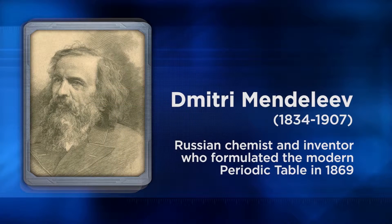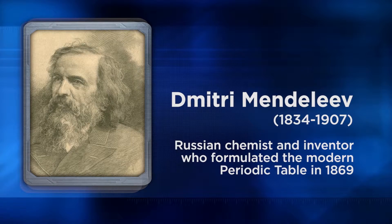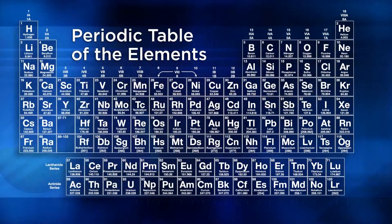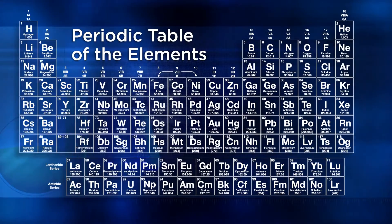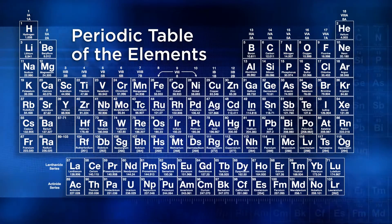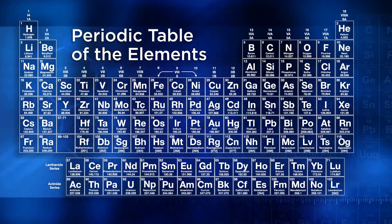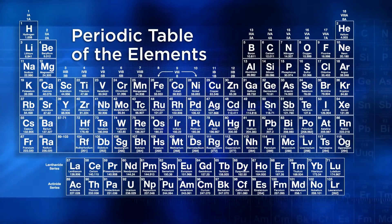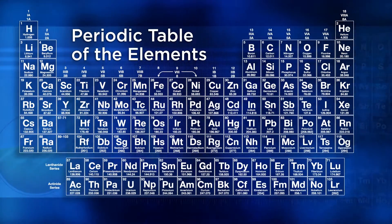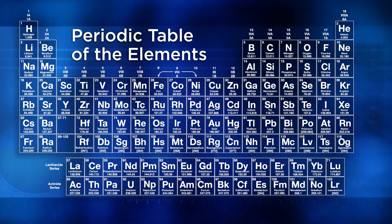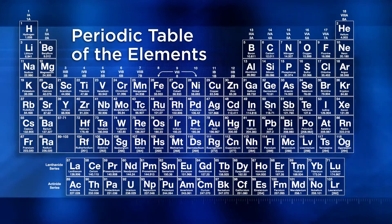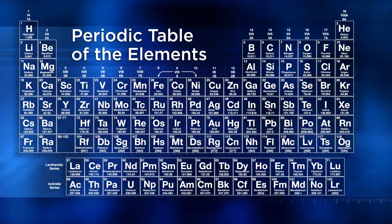We learned how Dmitry Mendeleev developed a system model called the periodic table as a way to show patterns of structure and chemical behavior among the known elements. Organized by atomic number and other characteristics, the periodic table reveals trends in physical and chemical properties such as mass, reactivity, and density.